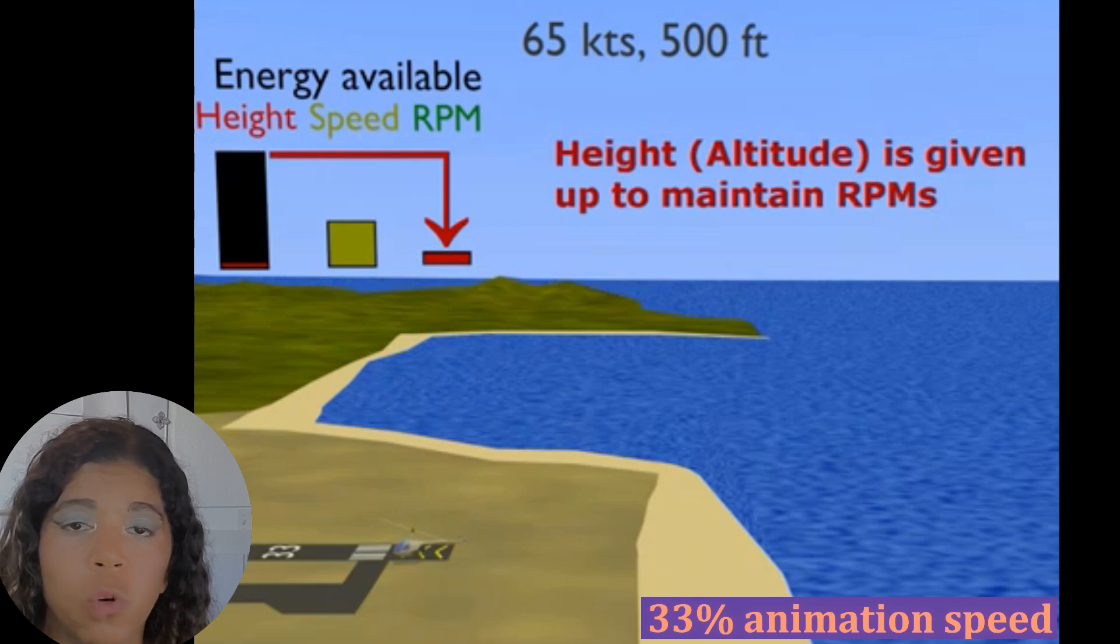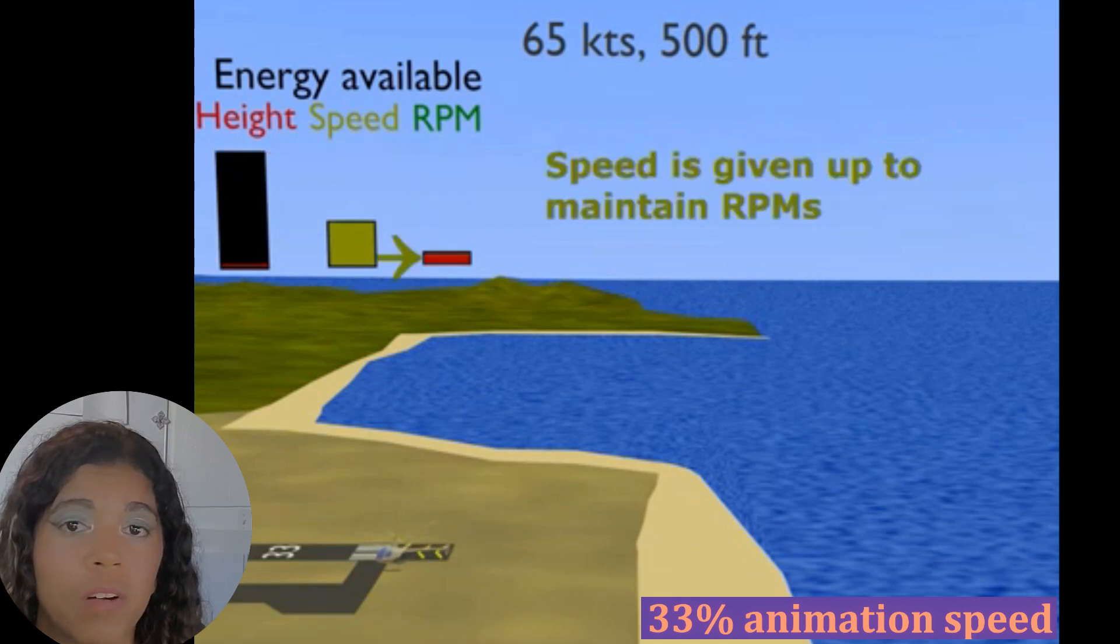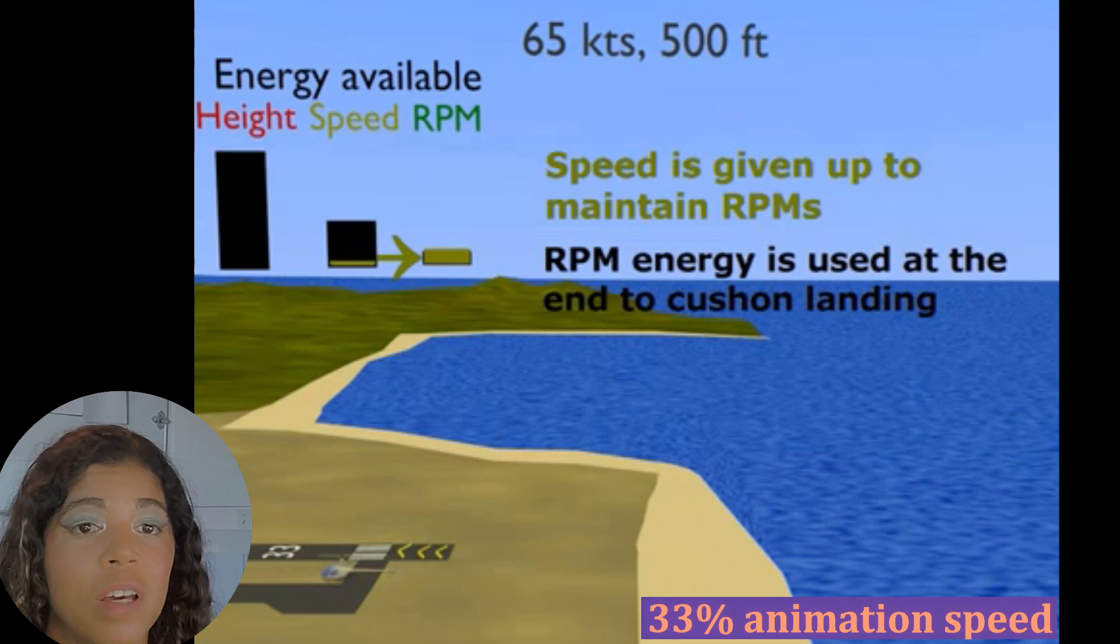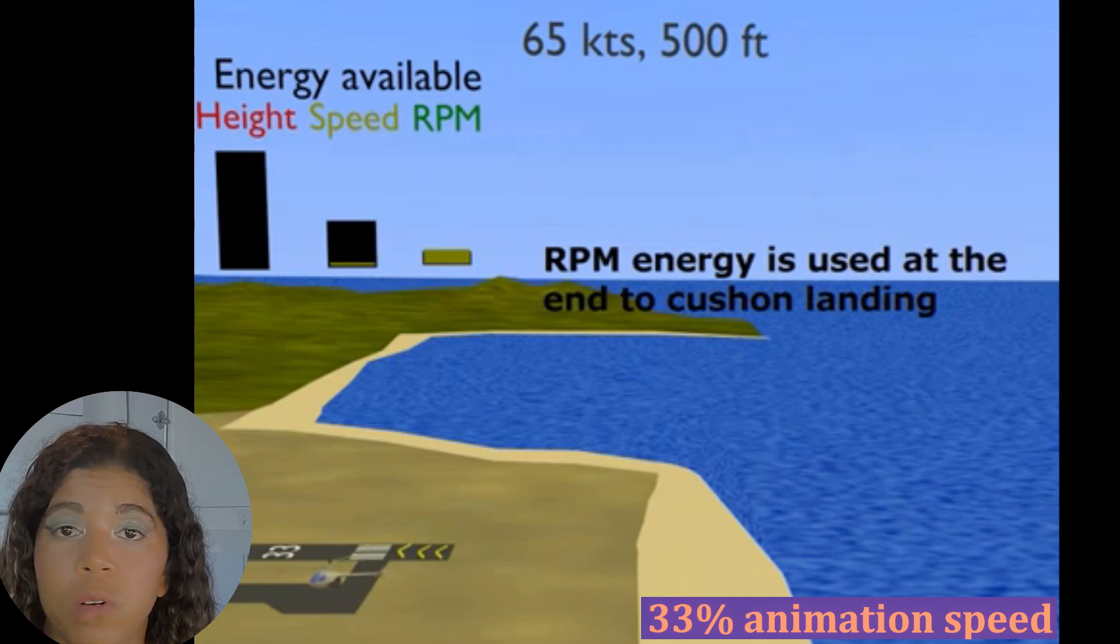As we get closer to the ground we can slow down our speed. When we're in the flare and slowing down our speed, that energy from our speed is now captured by the rotor disc. So now at the very end of our autorotation we're going to use the energy to have a nice soft gentle landing and touchdown.